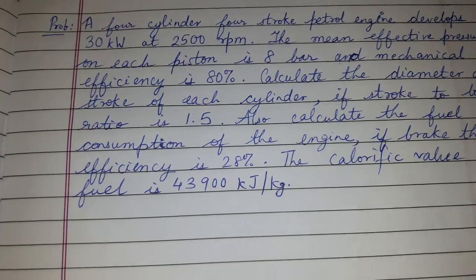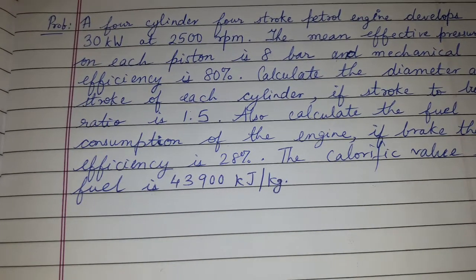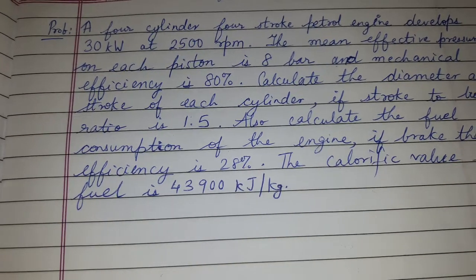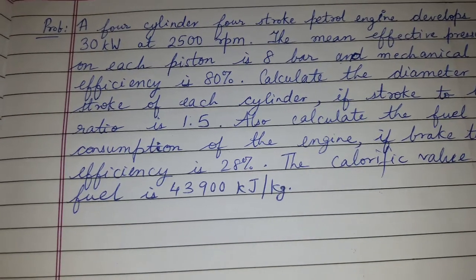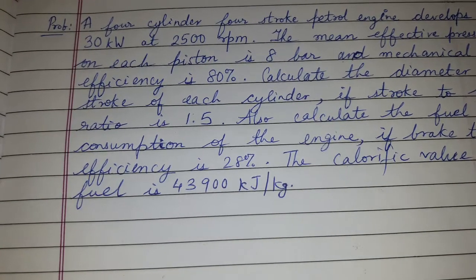There may be confusion about how we know this is brake power. Because brake power is the power which is available at the crankshaft, and it is given 30 kilowatts at 2500 rpm, that's why it is brake power.